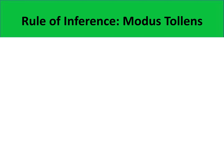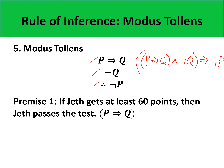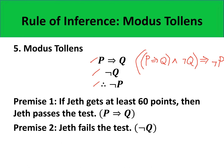The next rule of inference looks like modus ponens but is called modus tollens. Its format is P implies Q as the first premise and negation of Q as the second premise, with conclusion negation of P. Its propositional form — P implies Q, and negation of Q implies negation of P — is a tautology since modus tollens is also known to be valid. For example, premise one: if Jett gets at least 60 points, then Jett passes the test (P implies Q). Premise two: Jett fails the test (negation of Q). By modus tollens, our conclusion is negation of P: Jett does not get at least 60 points.